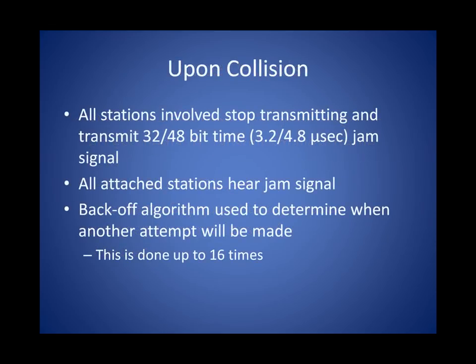Nodes involved in a collision must stop transmitting, issue the jam signal, and back off and wait before transmitting again. How long they wait is governed by the binary exponential random backoff algorithm, which takes into account the number of times the node has collided, a random number, and the slot time. These are run through the algorithm to produce a random wait value. Nodes will typically retry a certain number of times — most commonly 16 — before determining there might be a problem on the network. Remember, all of this collision handling assumes shared media; once switches are in place, it's almost eliminated entirely.